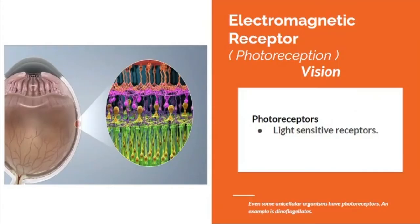The electromagnetic receptor, known as photoreception, responds to light energy — this is vision. The world around us is bathed in light. The sense organs we use to sense light are the eyes. Photoreceptors are light-sensitive receptors, and even some unicellular organisms such as dinoflagellates have them.